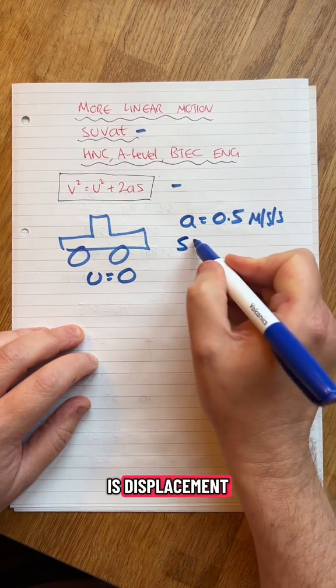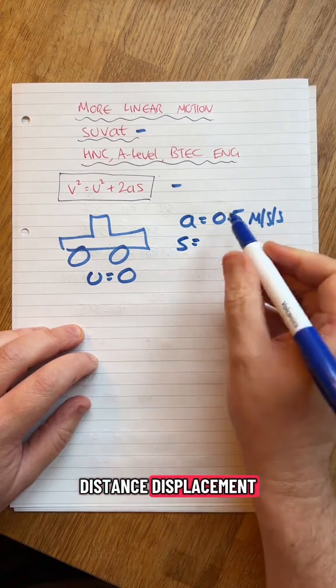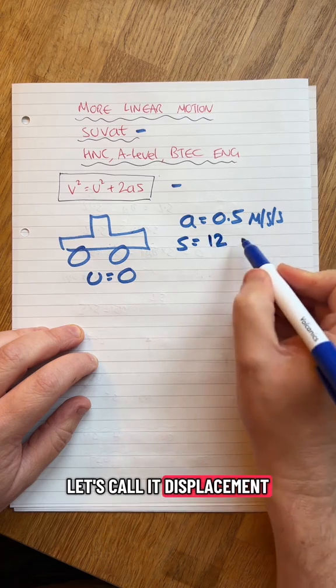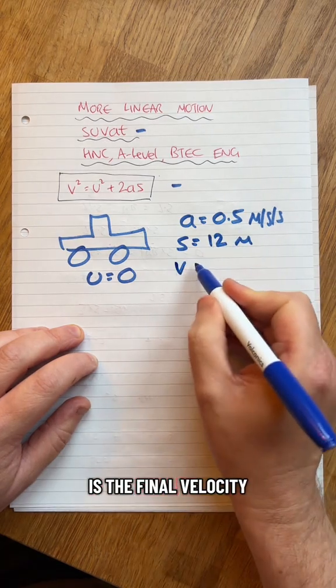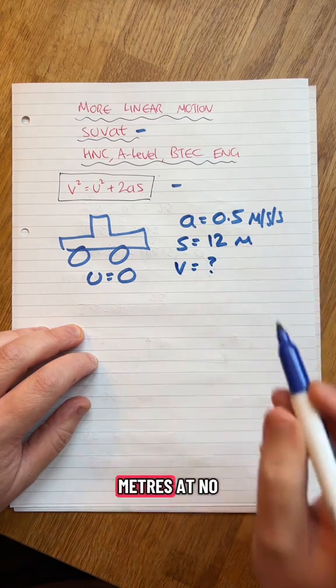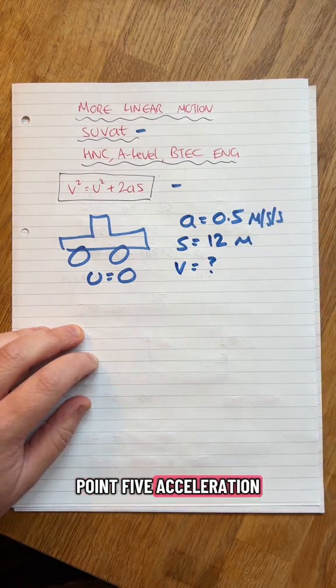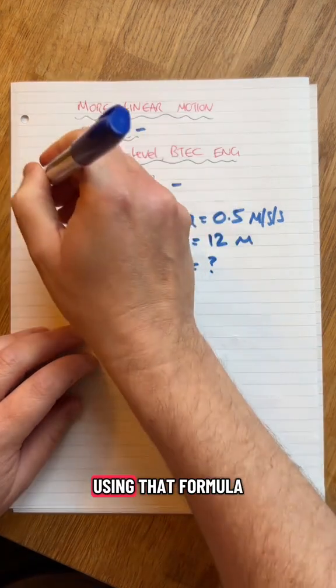S is displacement. Distance, displacement, there's a difference but let's call it displacement: 12 meters. What is the final velocity? This car is going to go 12 meters at 0.5 acceleration. What is the final velocity using that formula?